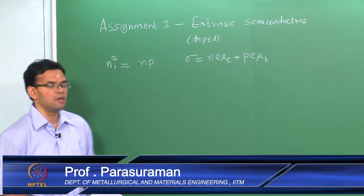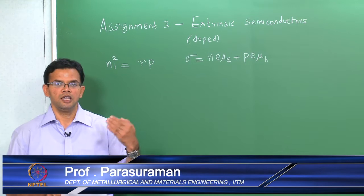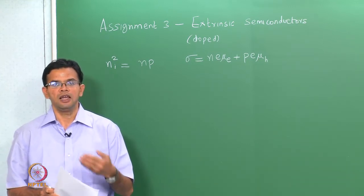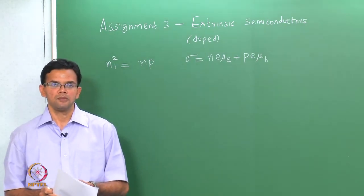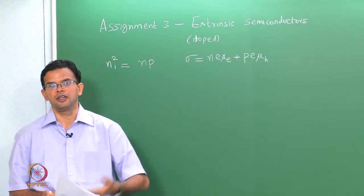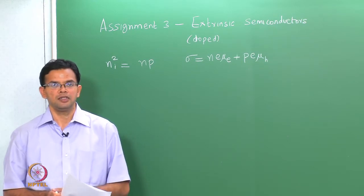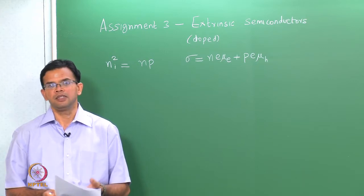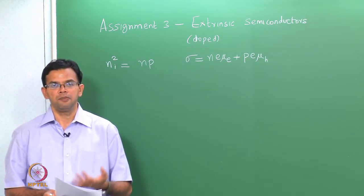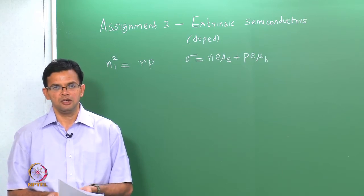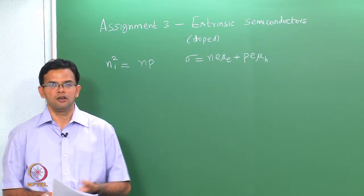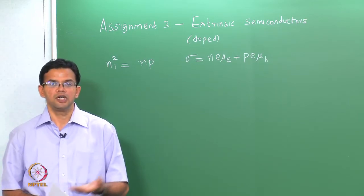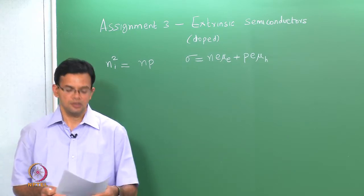The conductivity will be either due to the motion of electrons or due to the motion of holes. In the case of an extrinsic semiconductor, because we do not have equal numbers of electrons and holes, the Fermi level will shift from the center of the gap — closer to the conduction band for an n-type semiconductor and closer to the valence band if it is a p-type semiconductor. This will also depend upon the temperature and whether all the donors or acceptors are ionized.